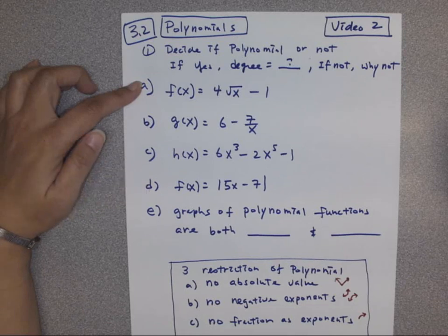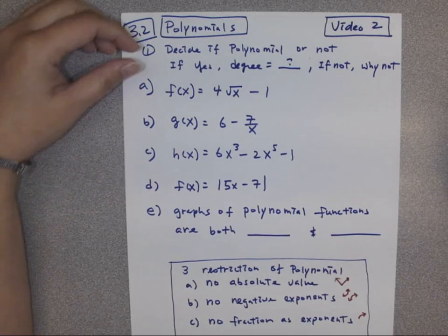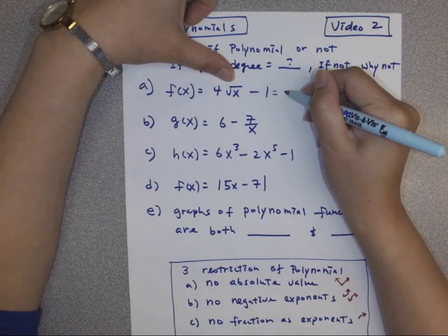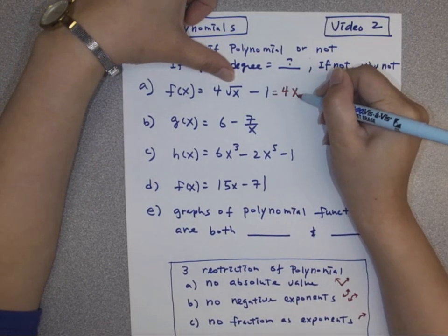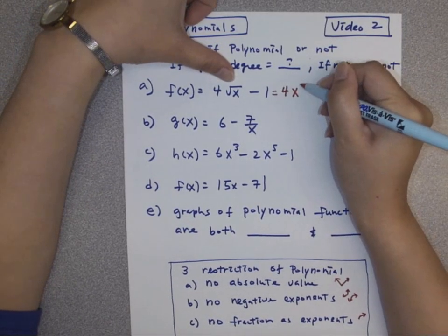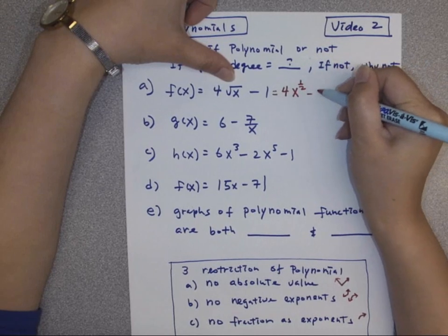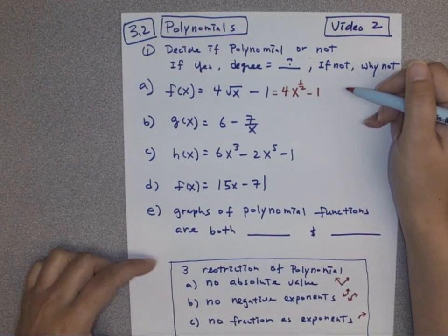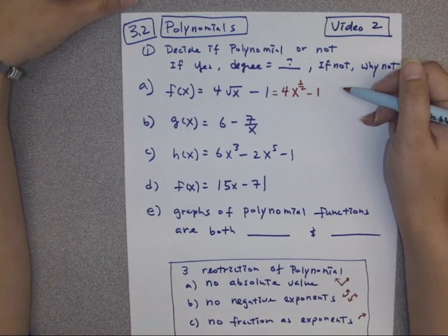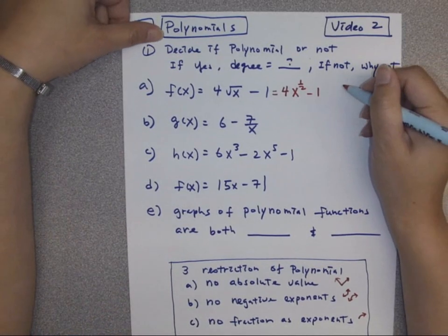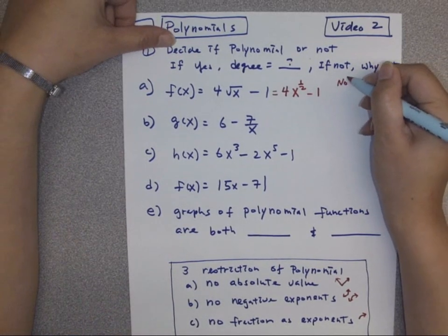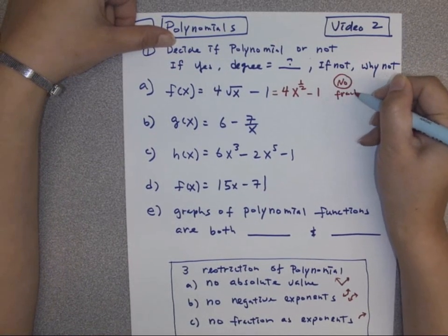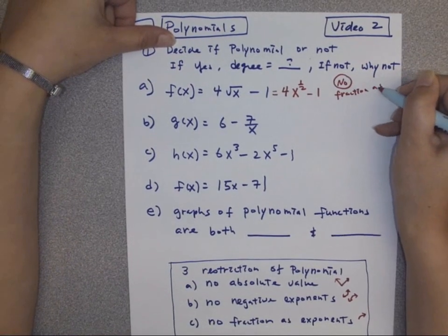So the first one — hopefully you know square root of x — we can rewrite that as 4x raised to the 1/2 power minus 1. So that's one of these restrictions: we cannot have fractions as exponents. So we're going to say no, not polynomial. It has fractions as exponents.